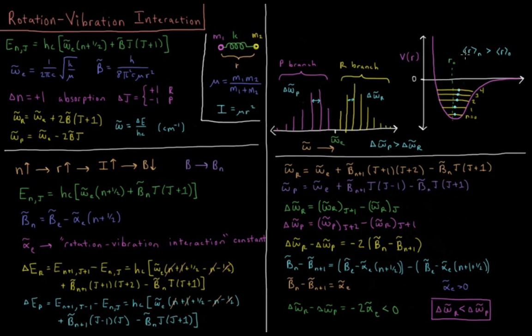So what happens is, our bond length for n greater than zero is greater than our bond length for n equals zero. And as our vibrational quantum number goes up, bond length goes up. That means moment of inertia goes up because it's mu r squared. And I is in the denominator, mu r squared of b bar, so b is going to go down. So we build a model where b is a function of our vibrational quantum number. The rotational constant changes as we go up in vibrational quanta.